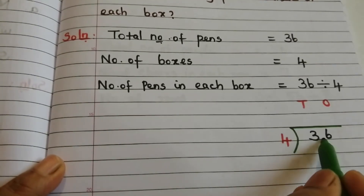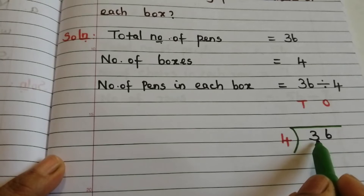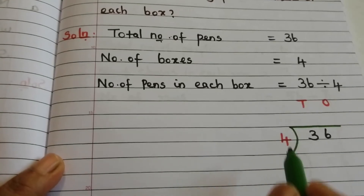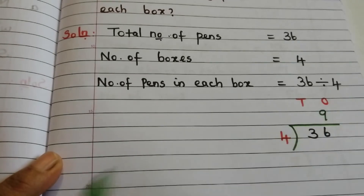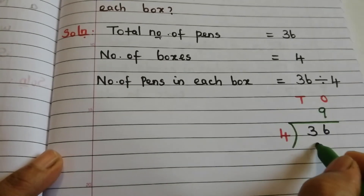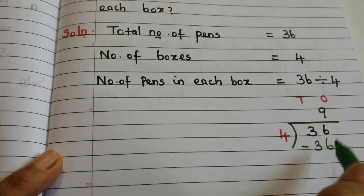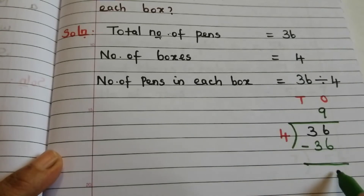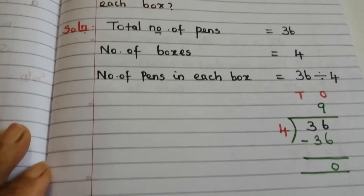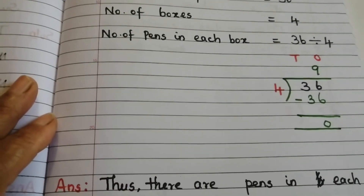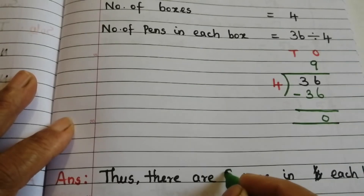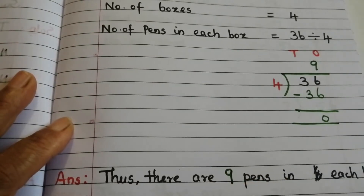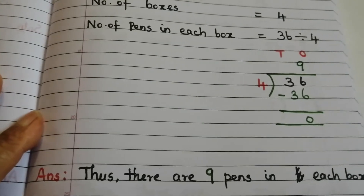Since 3 is less than 4, we take 36. Using the 4 times table: 9 × 4 = 36, remainder 0. So the answer is 9. Thus there are 9 pens in each box.